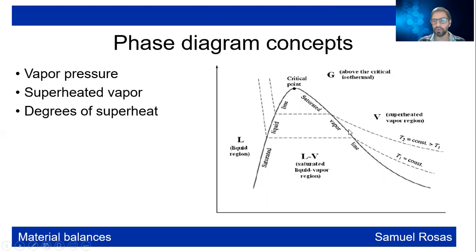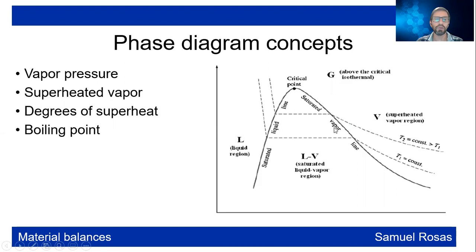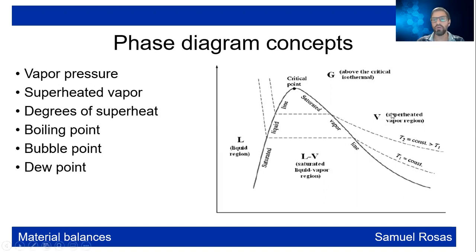The degrees of superheat is the number of degrees Celsius above the saturation temperature in the vapor region. For example, if you have water vapor at 120°C and the evaporation temperature is 100°C, then you have 20 degrees of superheat. The boiling point is the temperature at which evaporation starts. Coming from liquid and reaching the boiling point is called the bubble point because you see bubbles start to emerge. But if you go from vapor and decrease temperature until condensation, you reach the dew point — the same concept, just with different names.